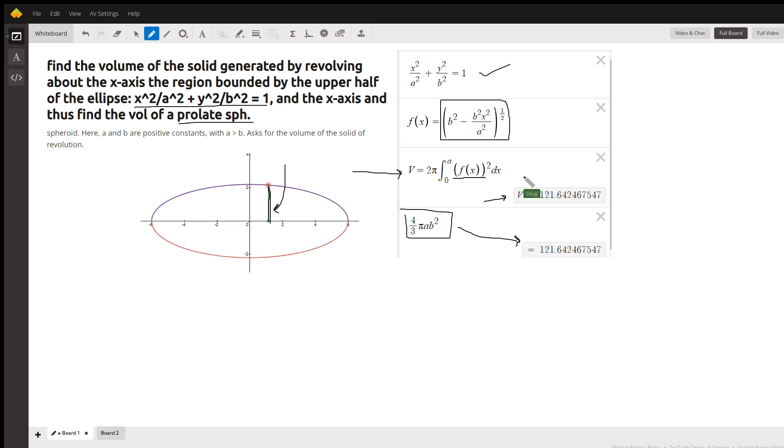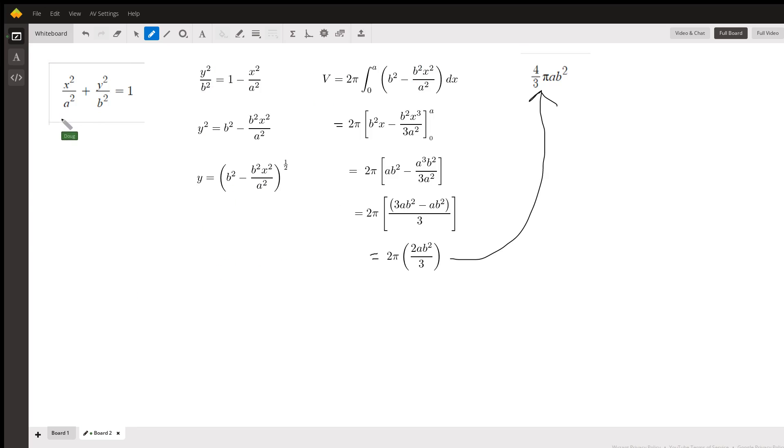Okay, so the question is how do we get from here to here to here? So here's the general equation. We want to solve for y, so we'll subtract x squared over a squared from both sides.